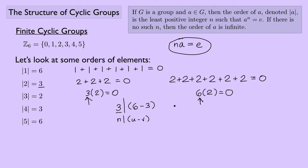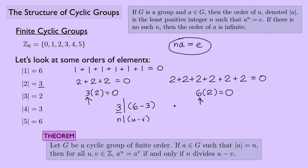This motivates the theorem: let G be a cyclic group of finite order. If A is an element of G with order n, then for all integers U and V, A^U = A^V if and only if n divides U − V.